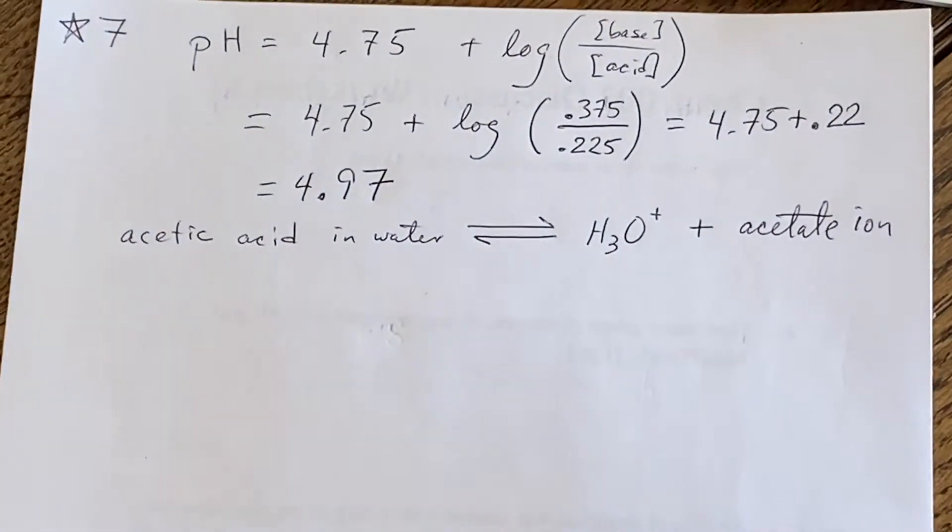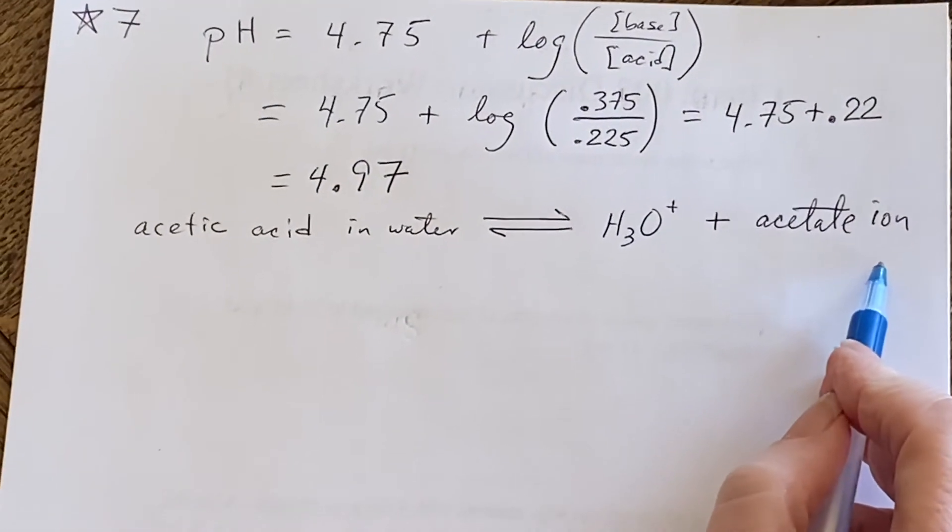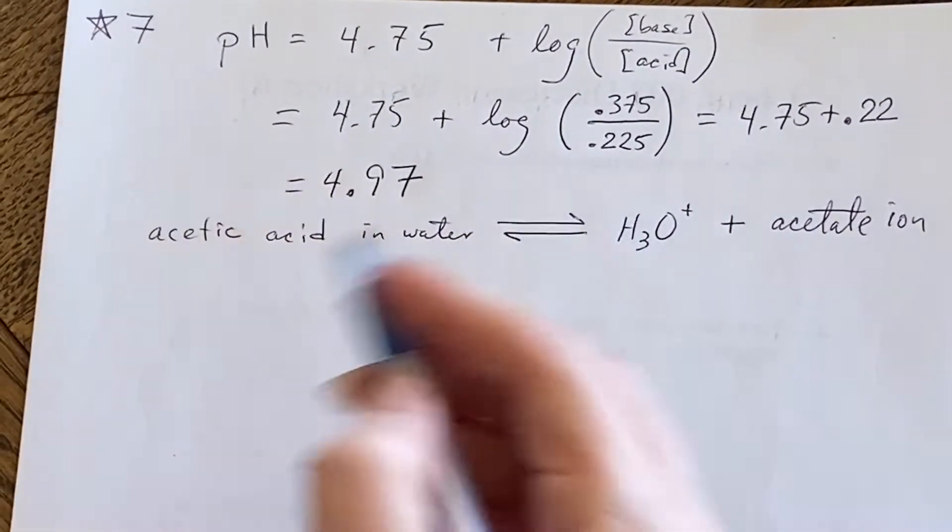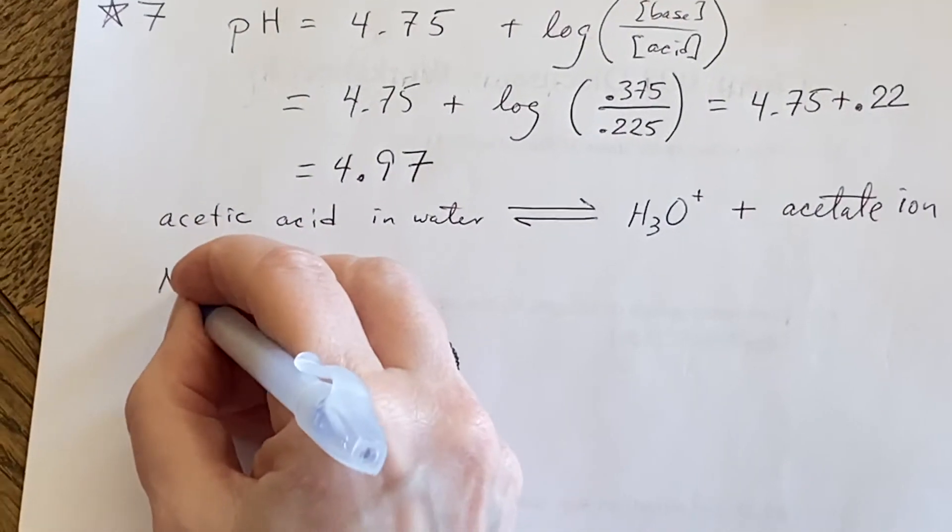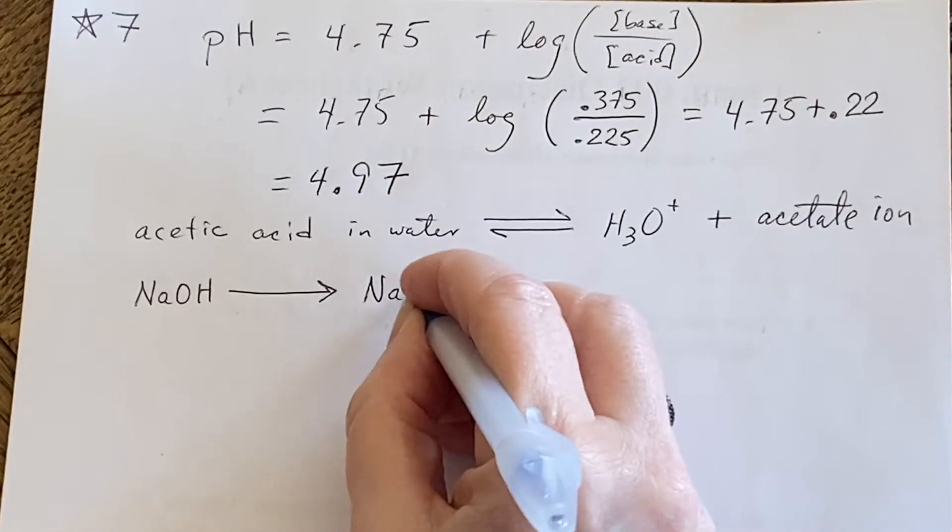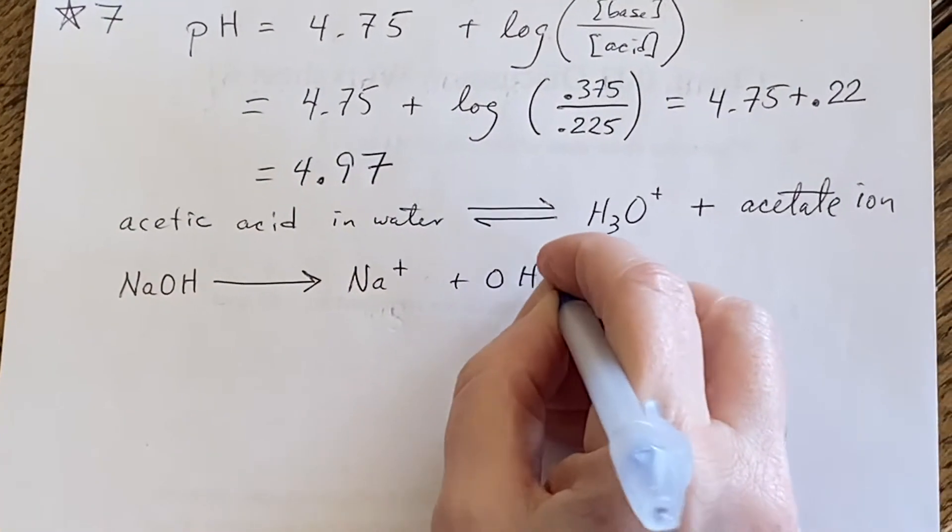What happens when I add the hydroxide to this? Well, the hydroxide is already a one-way trip to forming sodium ions and hydroxide ions.